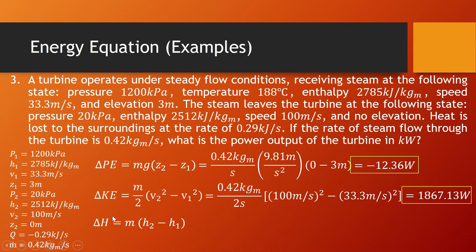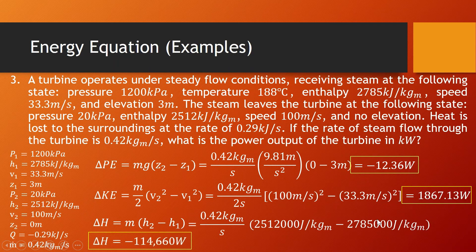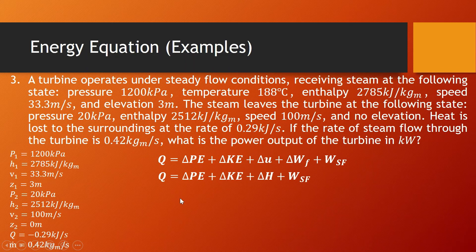The change in enthalpy is the difference between H2 and H1 multiplied by the mass flow rate. That is 0.42 times (2,512,000 joules per kilogram minus 2,785,000 joules per kilogram), since the given values in kilojoules are multiplied by 1,000. The result is negative 114,660 watts. Using the energy equation and noting that the sum of internal energy and flow work equals the change in enthalpy, we can substitute all known values.